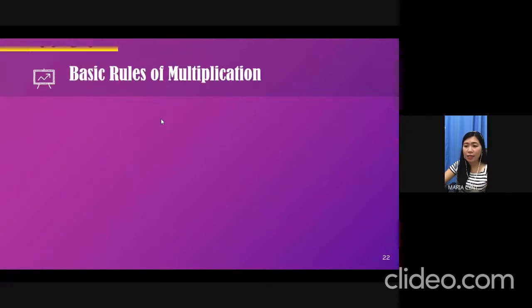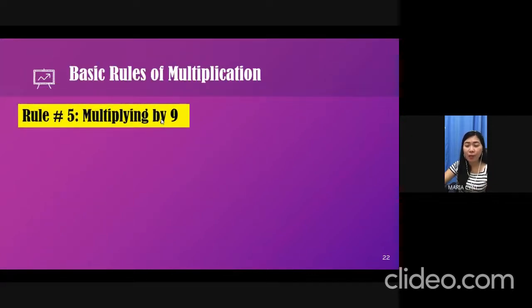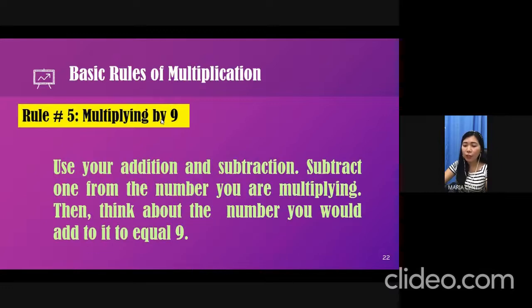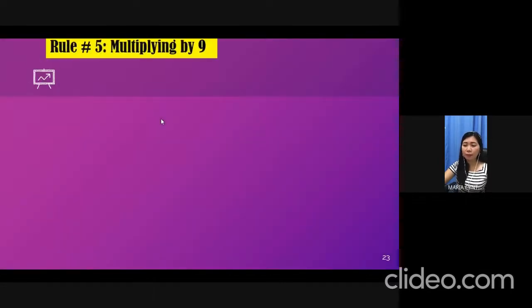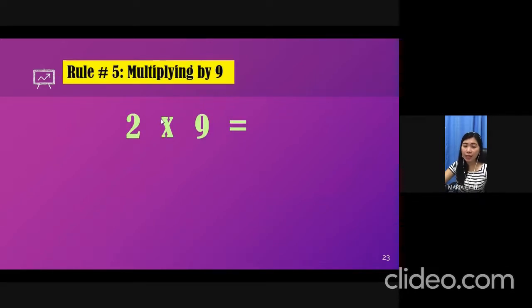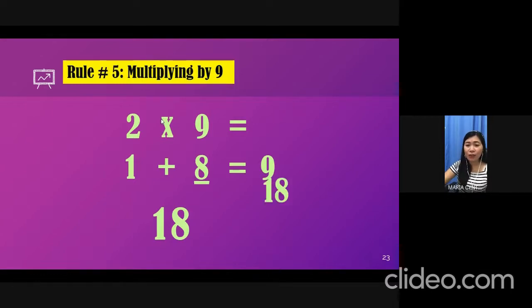Let's study the last rule, which is multiplying by 9. Use your addition and subtraction. Subtract 1 from the number you are multiplying. Then think about the number you would add to it to equal 9. For example, 2 times 9. 2 minus 1 is equal to 1. And then you ask yourself, what number am I going to add to 1 to make it 9? Of course, the answer is 8. Therefore, 2 times 9 is equal to 18.